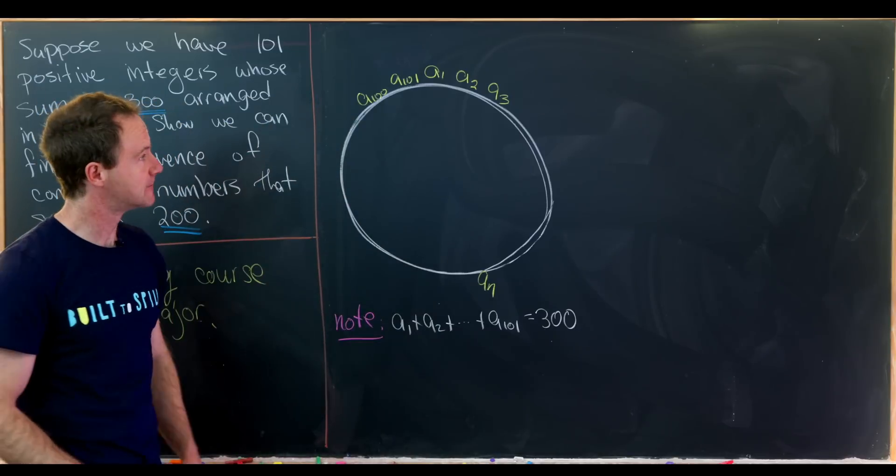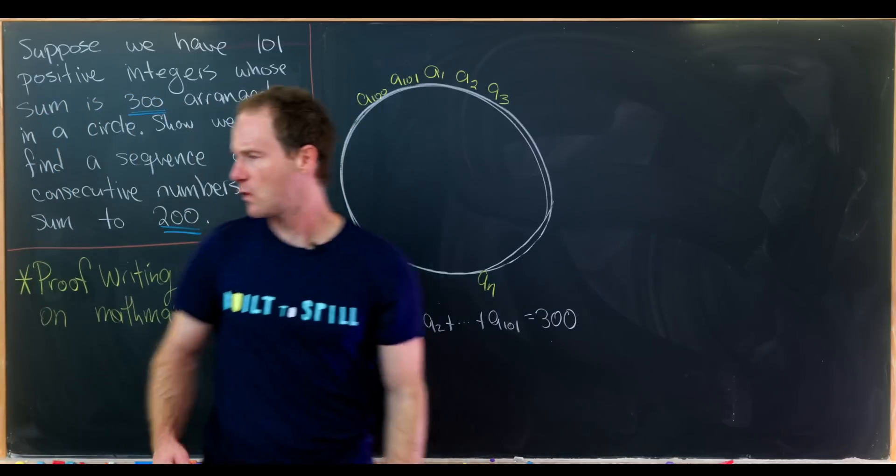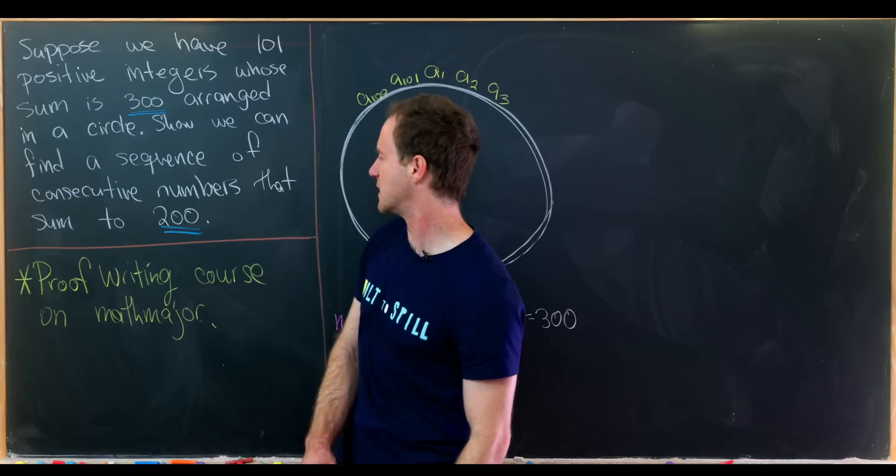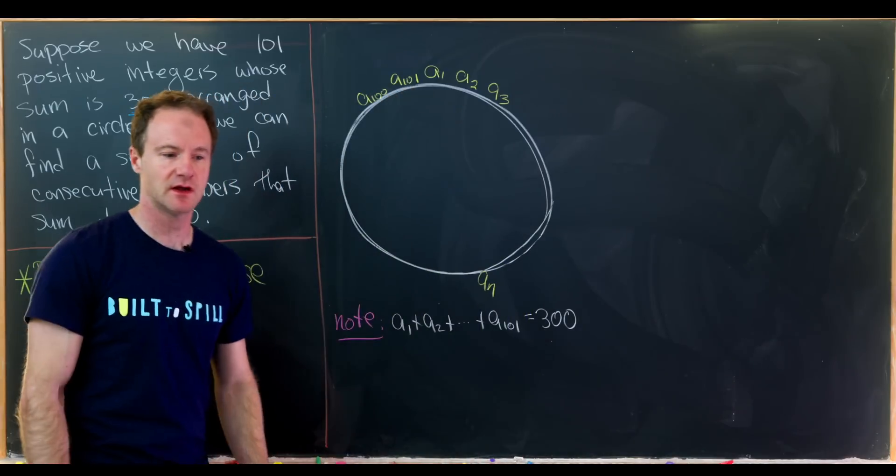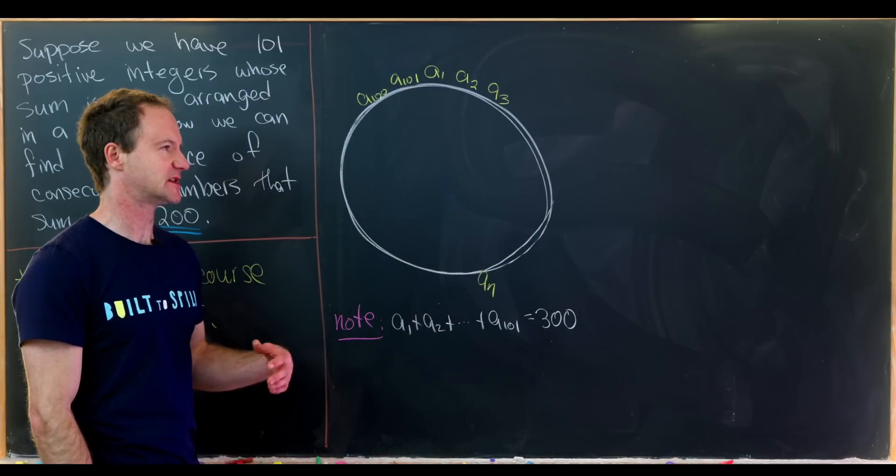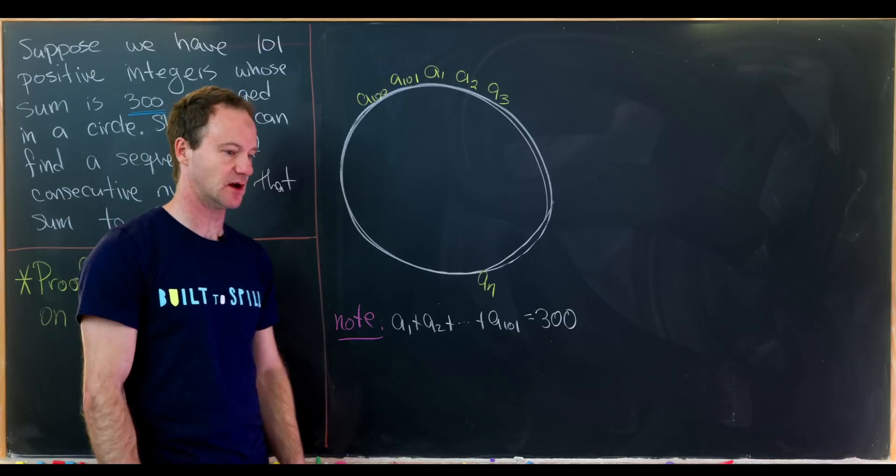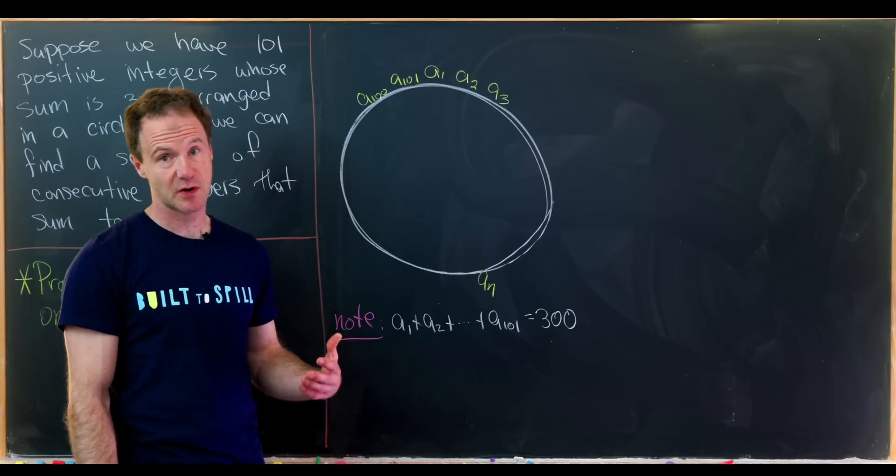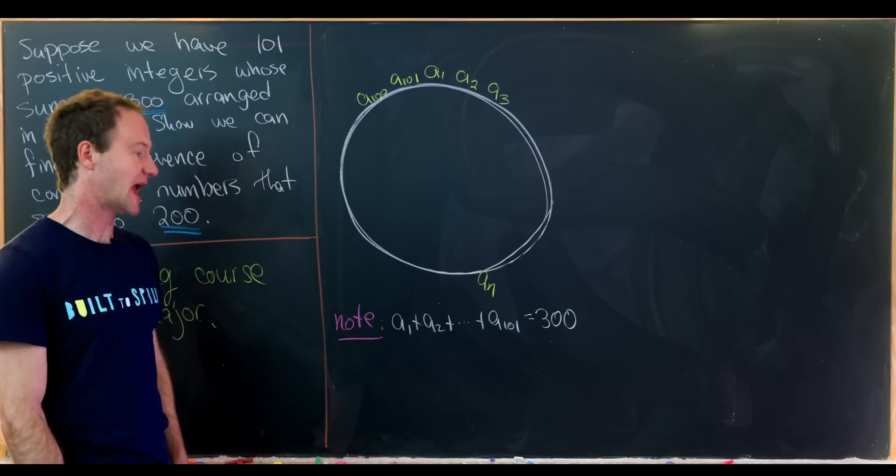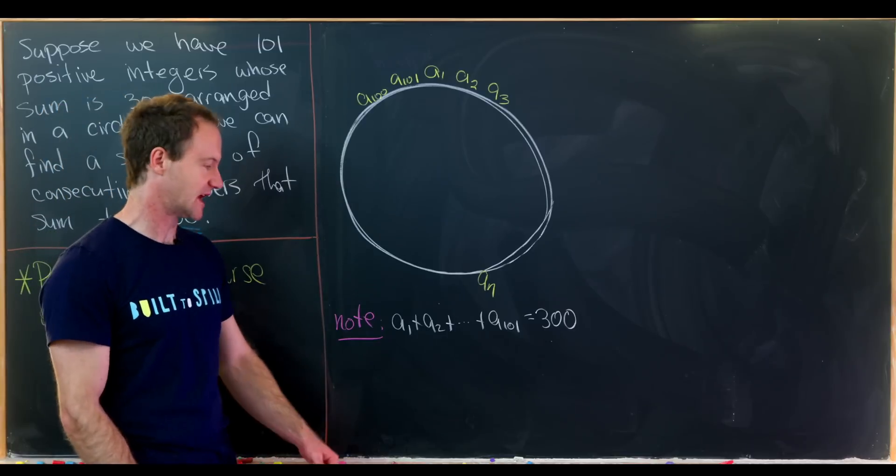That means we have a1 plus a2 plus dot dot dot plus a101 equals 300. Okay, so that's good. But now since we want a consecutive sequence to add to 200, that motivates us to define something called a sequence of partial sums.